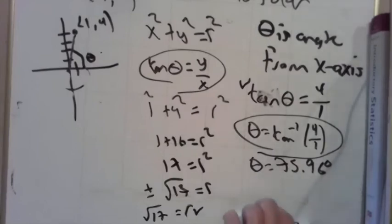Square root of 17, let's approximate that: r is 4.12.